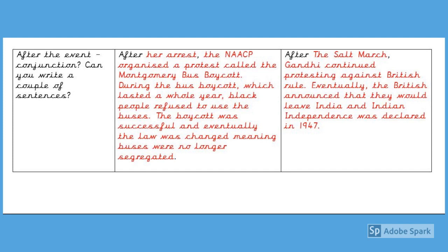The last part of the second section of the biography talks about what happened after the event. When I've innovated in my example about Gandhi, I've used the same structure, so I've still used a fronted adverbial. In our text map, the fronted adverbial was 'after her arrest.' In my innovation, I've changed that fronted adverbial to 'after the Salt March.' And I've then described some things that happened after the Salt March because of all of Gandhi's protesting. So here you'll be describing some things that happened after the main event you've just been discussing. Pause this video now and complete this last section of the second section of the biography.